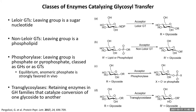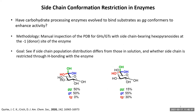Finally, we have the transglycosylases, which are a family of retaining enzymes that, based on amino acid sequence, are categorized under glycosyl hydrolase families. That being said, they do catalyze the transformation of one glycoside to another. Now that we've gone through the different types of enzymes we're looking at, we come back to the main question of the talk: have these enzymes evolved to bind their substrates in the GG conformation to maximize reactivity?